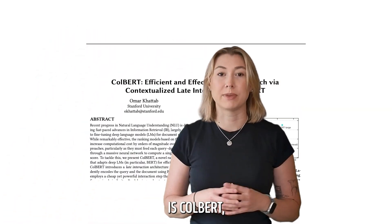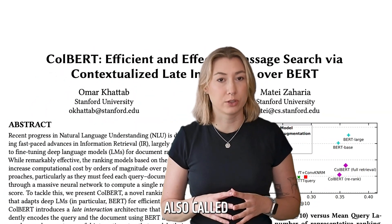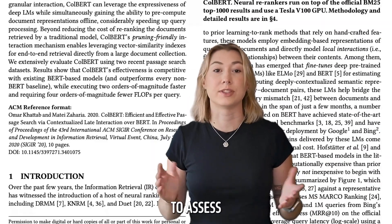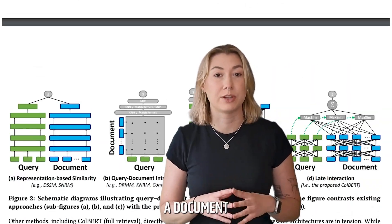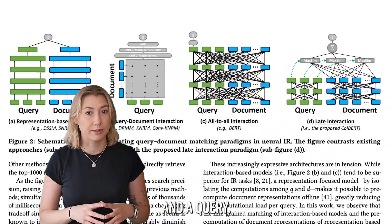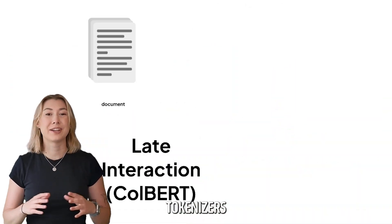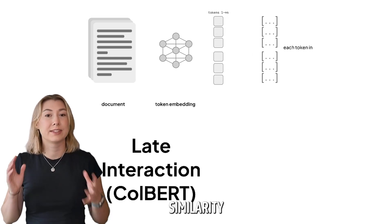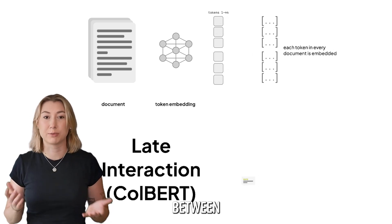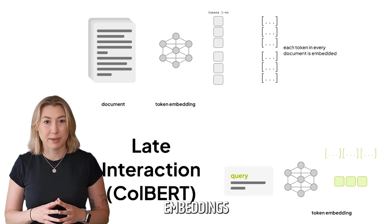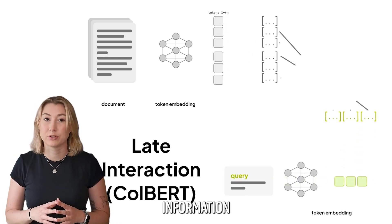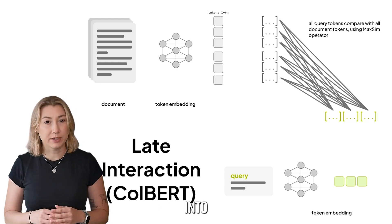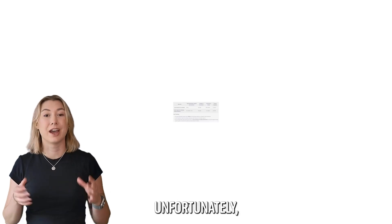On the other end of the spectrum is Colbert, also called late interaction. Colbert doesn't use chunking at all to assess similarity between a document and a query. Instead, it tokenizes the entire document and query and does a similarity matrix between them. This means it keeps positional embeddings and contextual information relevant, meaning we don't run into problems with lost context.